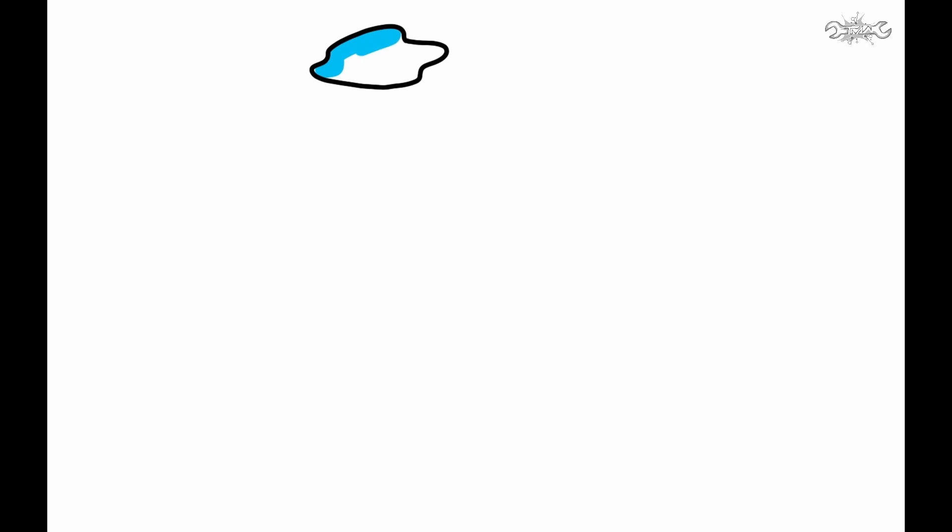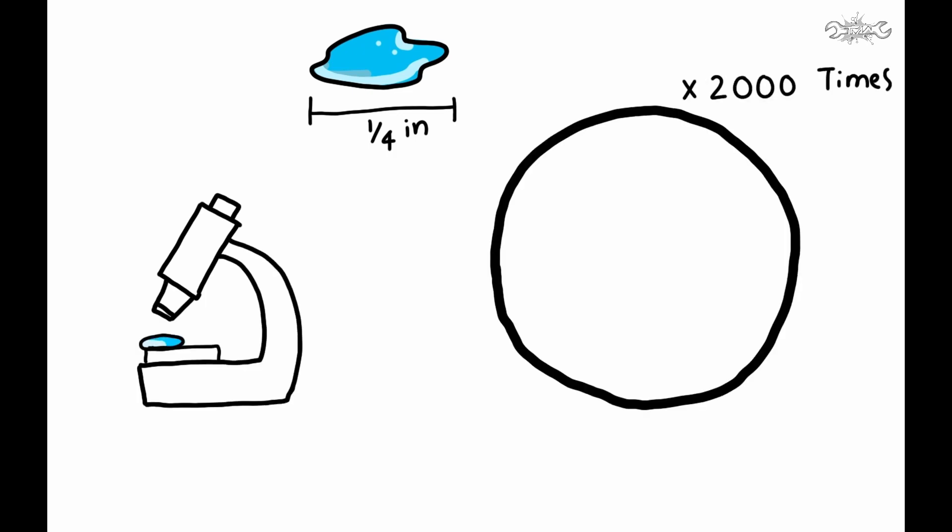Water is a simple example of matter that has certain mass and volume. Take a drop of water which is around one-fourth of an inch and zoom it under a microscope for 2000 times. It is still smooth water spread across 40 feet. We may spot certain wiggling particles here and there but these are paramecia or some kind of microbial things belonging to biology.